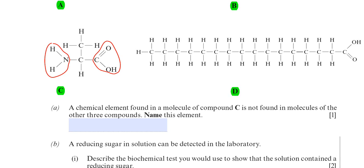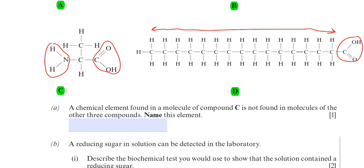The last compound, compound D, also has a carboxylic acid group. Attached to that carboxylic acid is a long chain of carbons, and each carbon has a hydrogen atom attached to it, making this a hydrocarbon chain. There are quite a number of carbons here, and sometimes this molecule can have far more carbons than what's shown. So compound D is a fatty acid.